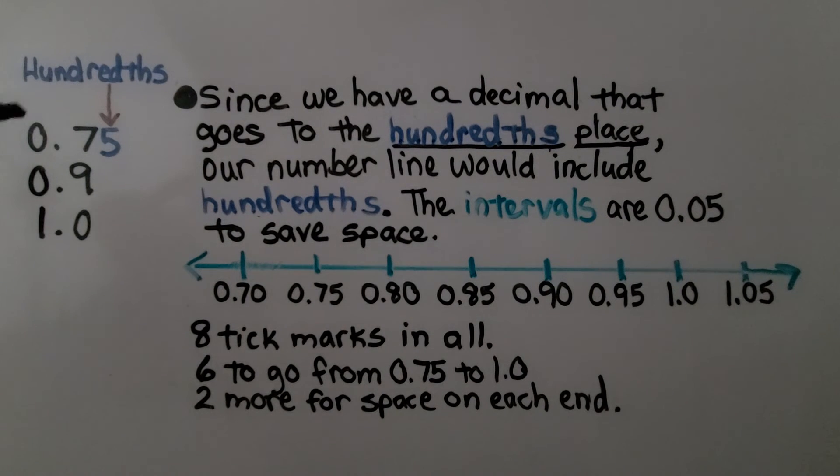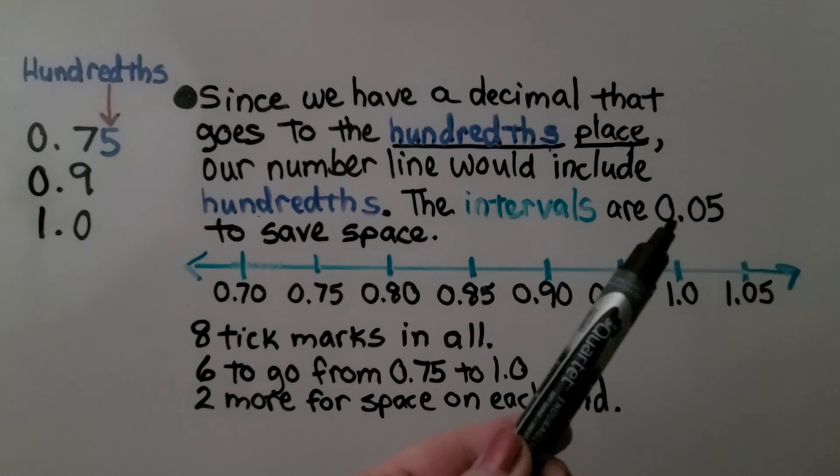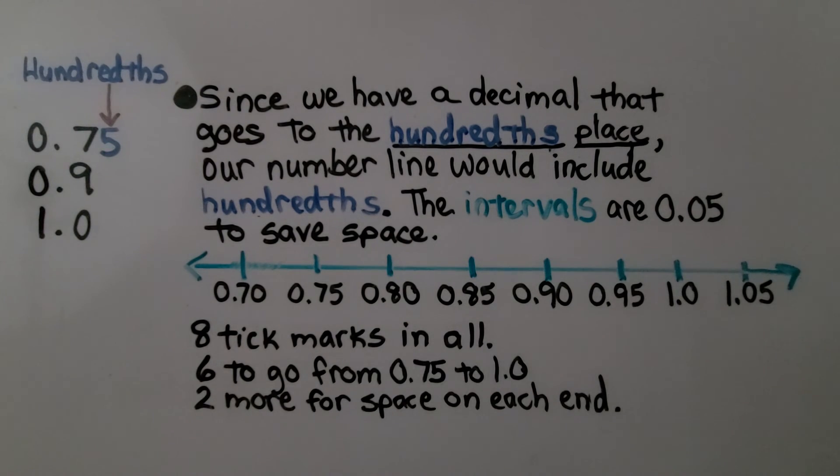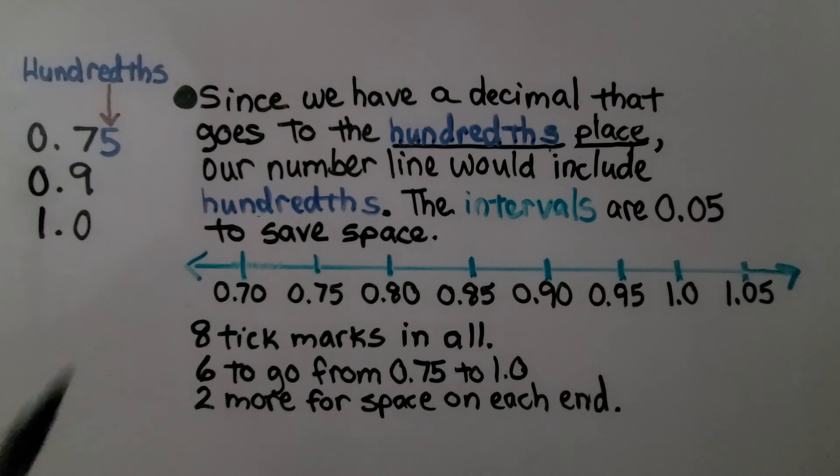Here we have 3 numbers. And since we have a decimal that goes to the hundredths place, our number line would include hundredths. And the intervals are 5 hundredths, .05, to save space. If we did every single hundredth, our number line would be way too long.